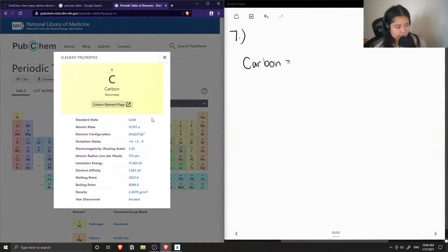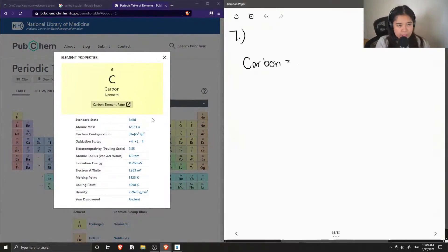Okay, so carbon is found here, and we can see that its atomic number is six.